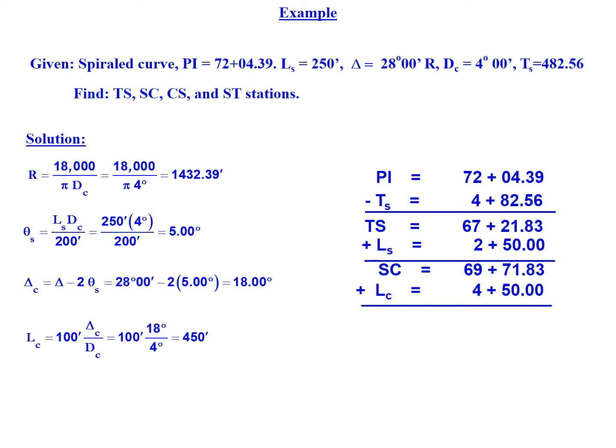At this point we'll add the length of the circular arc which is a 450 foot arc to get the CS point, 74 plus 21.83. Then we'll add our second spiral transition to take us out of the curve, 250 feet, and we'll end up with an ST point of 76 plus 71.83.